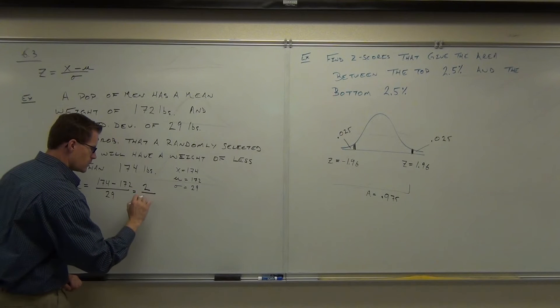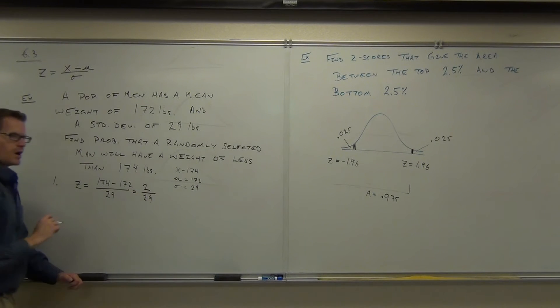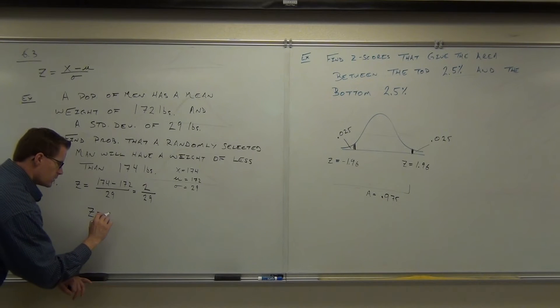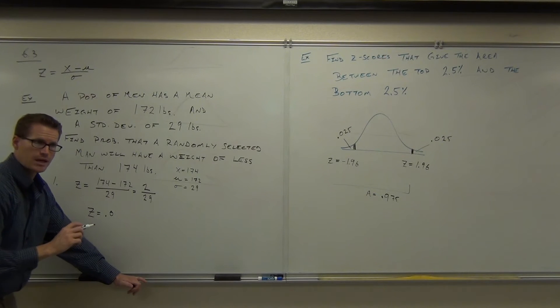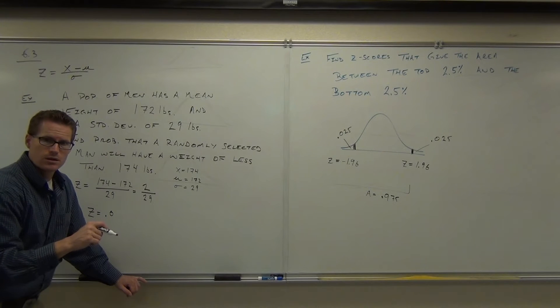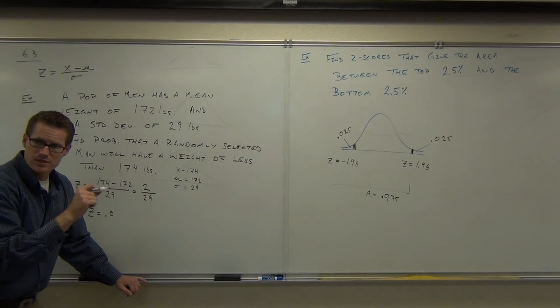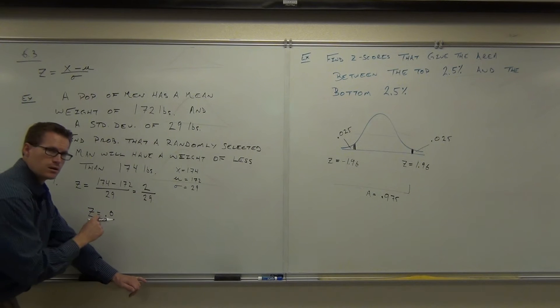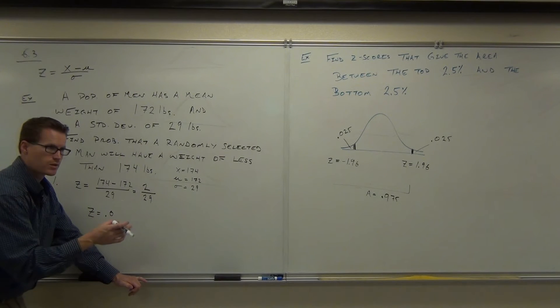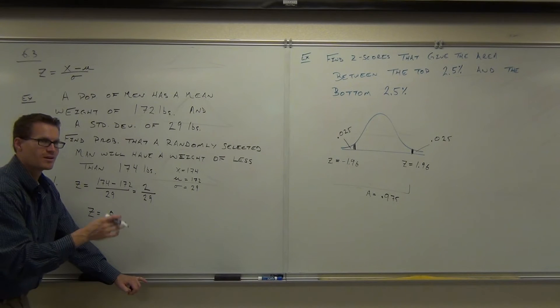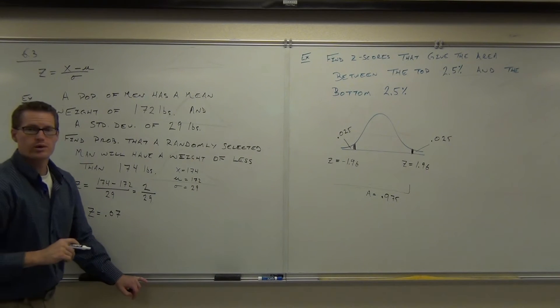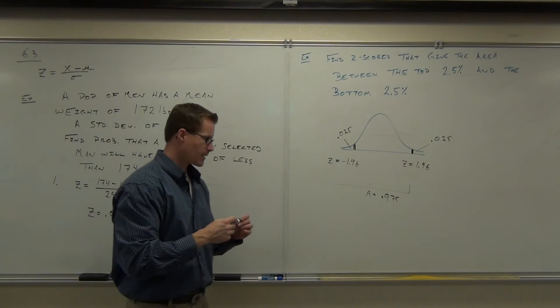In our case here, we've got 174 minus 172, all over 29. So we have 2 over 29. How much is 2 divided by 29? 0.067? Your table only goes to two decimal places. Round appropriately. Your z-score is 0.07.